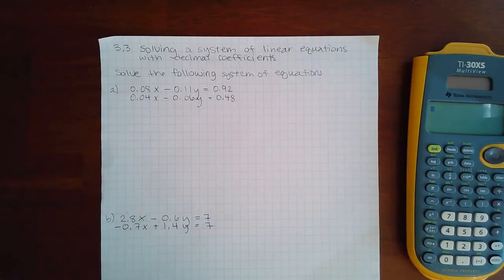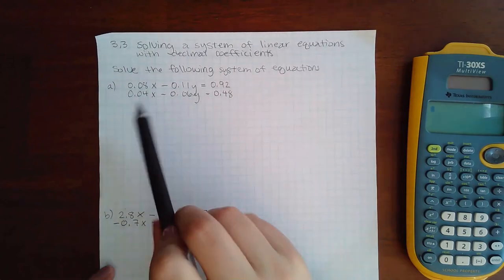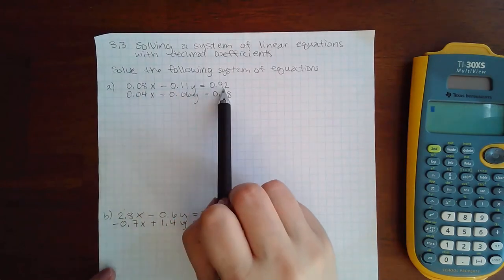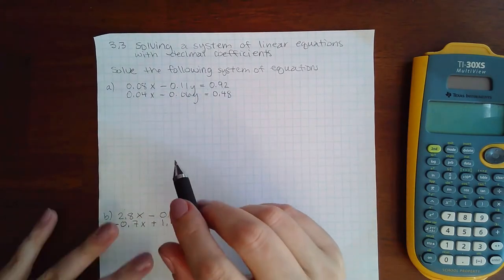Okay, here we have 3.3 solving a system of linear equations with decimal coefficients. In this section we will now deal with decimal values. So what you're going to do is you're going to look at each equation separately. Whichever term has the most decimal places, that's how many decimal places you're going to move.